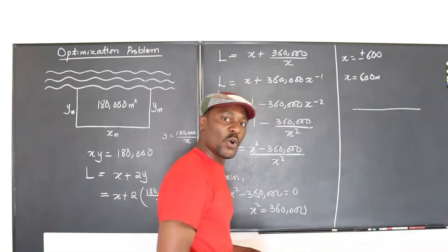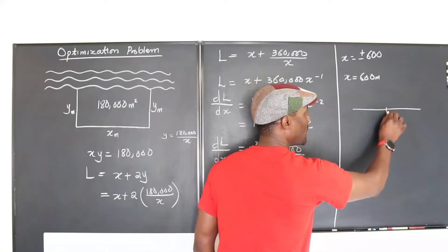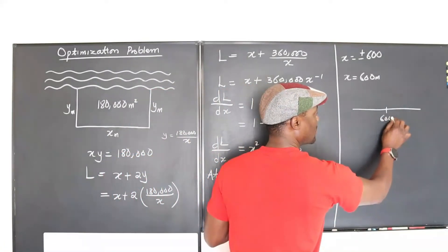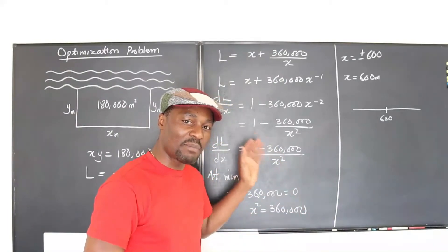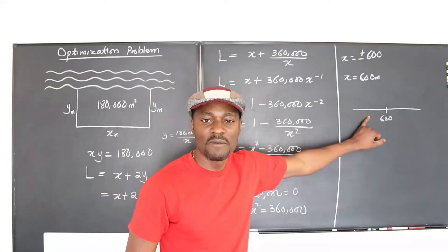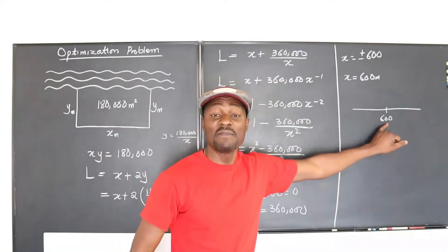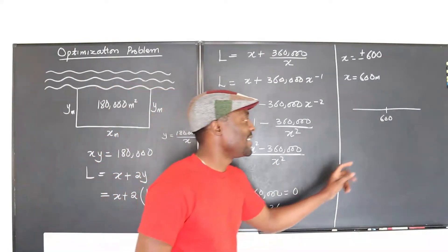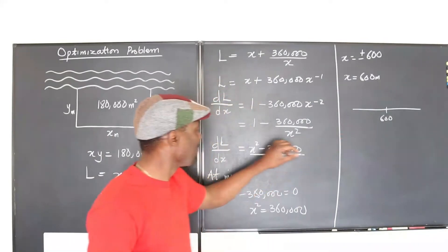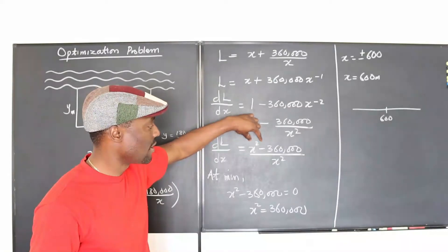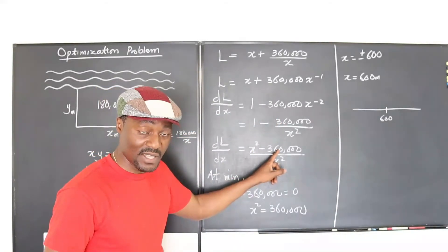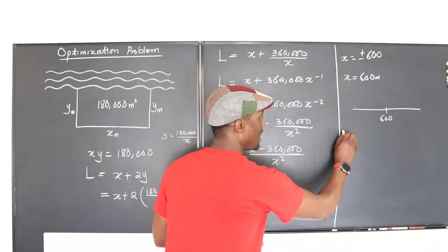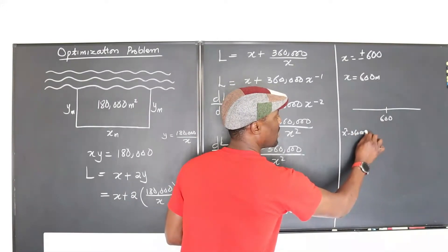You just do what you call the sign chart, and you test. So we want to test what's happening to this derivative. Let's say we pick a number that is less than 600. We haven't reached 600 yet. What's happening to the slope of this function? So I'm going to pick 500. If you plug in 500 here, you're going to end up with 500 squared is going to be 250,000 minus this. Well, 250,000 is less than 360,000, so your answer is going to be negative over positive. So we pick a value here, let's say we pick 500.